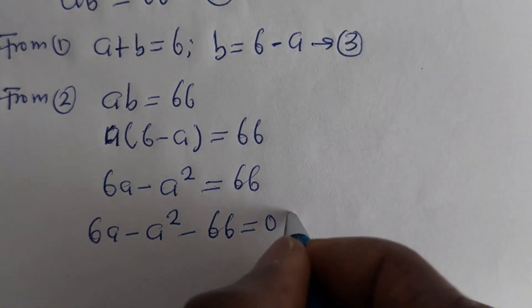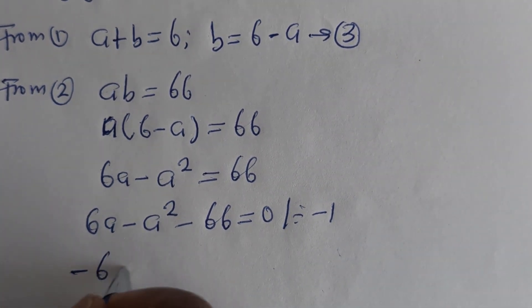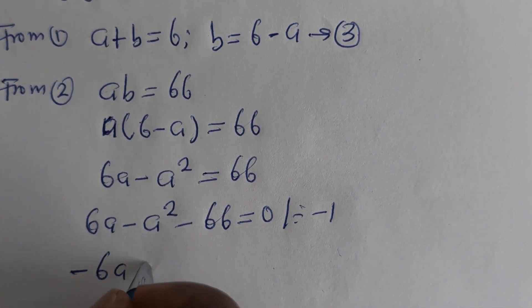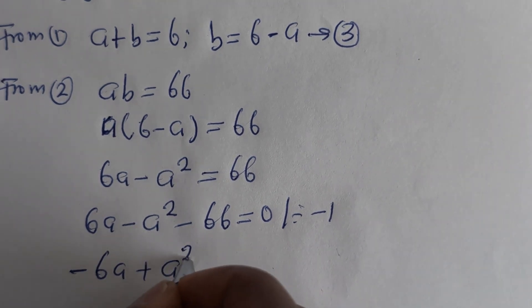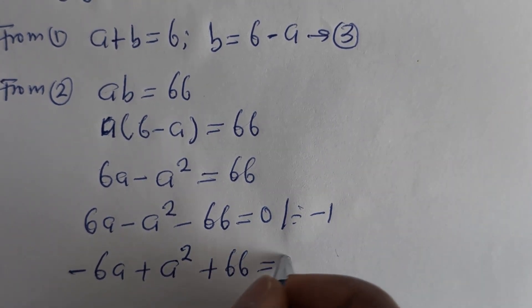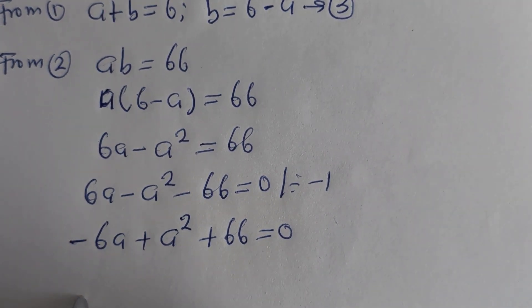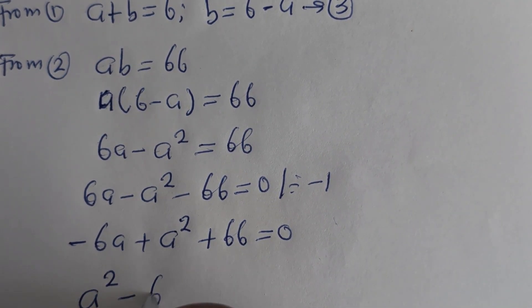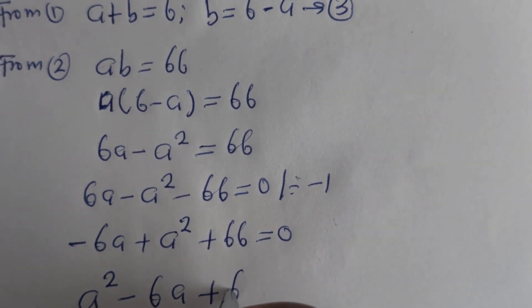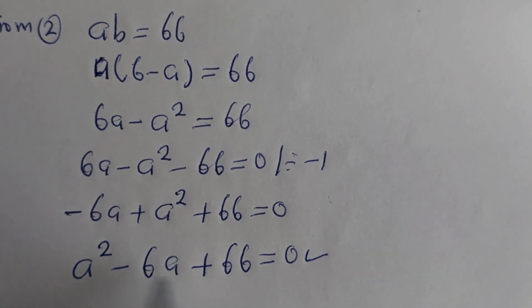So 6A minus A squared minus 66 is equal to 0. Dividing through by minus 1 gives: A squared minus 6A plus 66 is equal to 0. This is a quadratic equation in standard form.